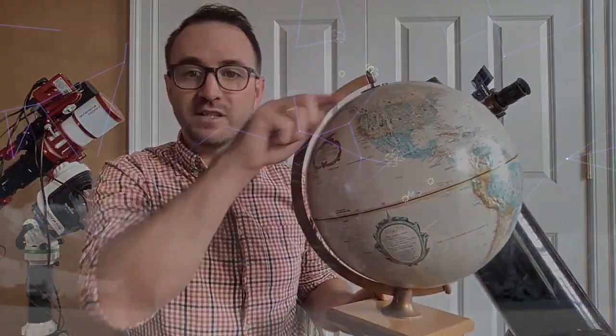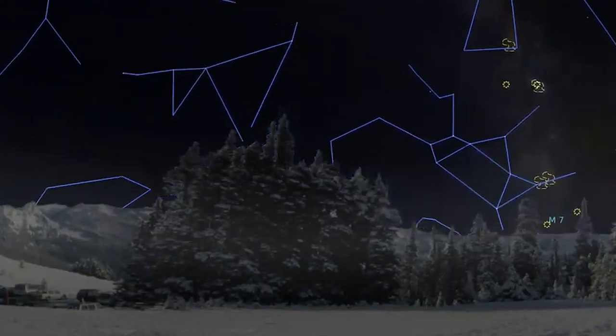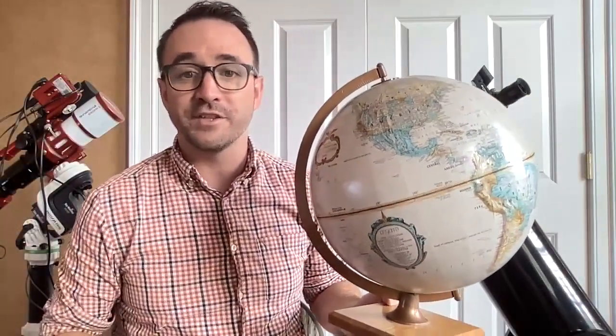If you live up north, for example, the southern objects may appear so close to the horizon that they're incredibly challenging to find. And if you live in the south, the northern objects will present a similar challenge.